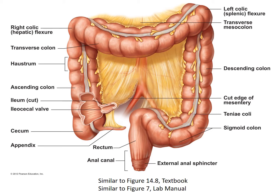One other structure I'd like to point out are these haustra. These are the pocket-like structures of the large intestine, which are very characteristic of it — typically what students recognize when identifying the large intestine. They are formed by the contraction of a band of smooth muscles called the taenia coli, which are not on your study guide, but when they contract they cause the formation of these pockets. So if I asked you to identify the pockets, haustra is what I'm looking for.